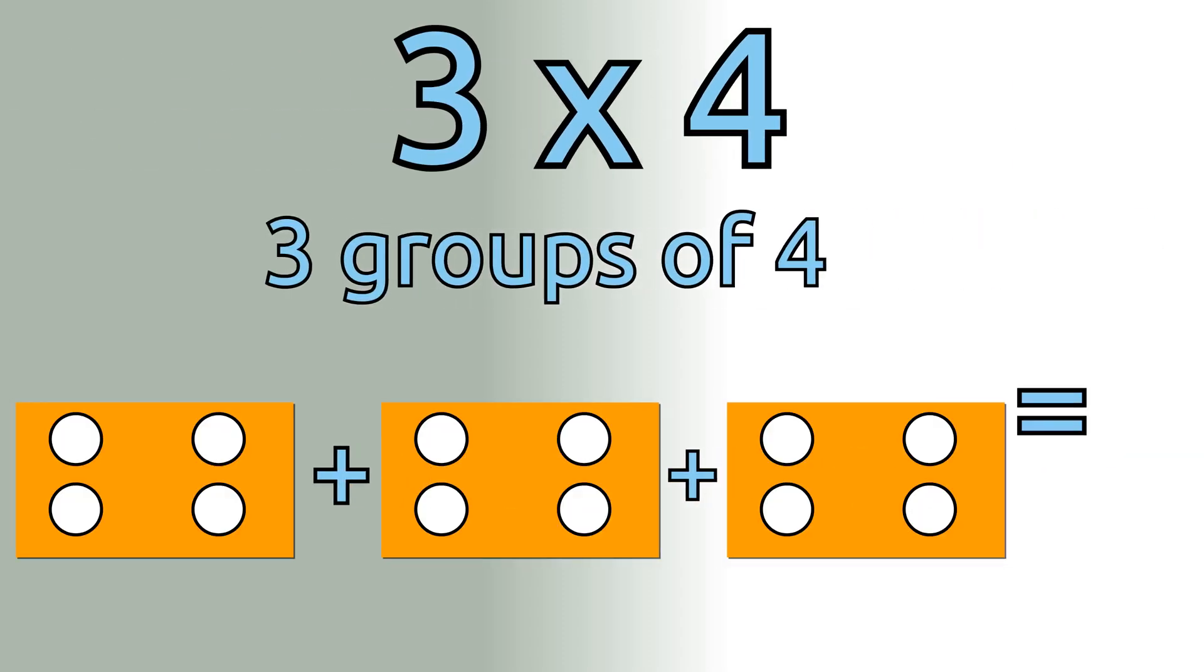For example, 3 times 4 is the same as 3 groups of 4, which we know is equal to 12.